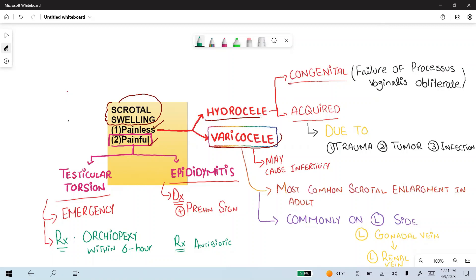Hydrocele further divides into two types: congenital hydrocele and acquired hydrocele. In congenital hydrocele, it is basically due to the failure of the processus vaginalis to obliterate. Normally, the testes develop in the abdomen and descend into the pelvis.